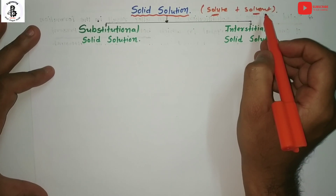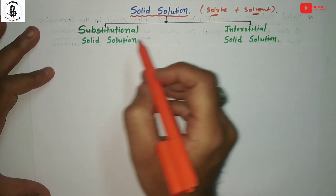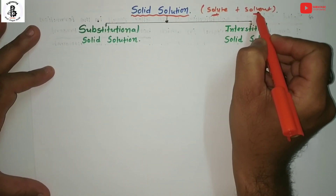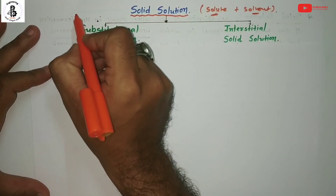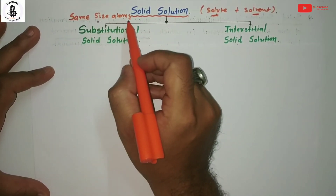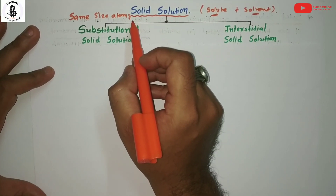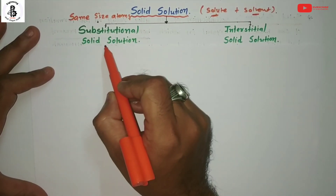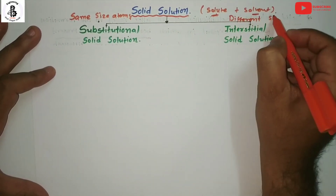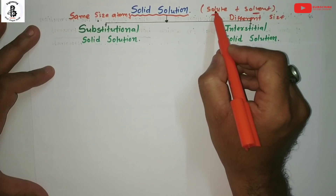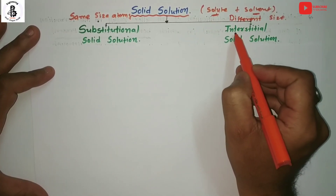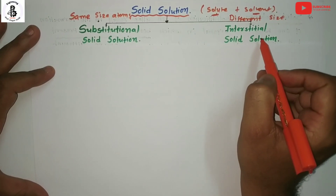If the solute and solvent atoms have the same atomic size, it is called a substitutional solid solution. On the other hand, if the solute and solvent atoms have a different size, it forms an interstitial solid solution.